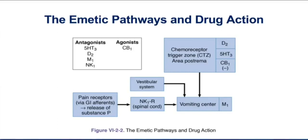Now let's look at the emetic pathways and drugs that can have a very important anti-emetic effect. Let's start with the receptors associated with causing vomiting. There are two receptors — the dopamine D2 and the serotonin 5-HT3 receptor — that are very popular targets as anti-emetics. Those receptors are found in the chemoreceptor trigger zone, and when they're activated, they cause vomiting. So clearly blocking D2 or blocking 5-HT3 are important anti-emetic strategies.